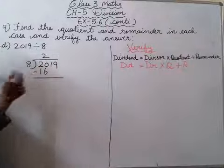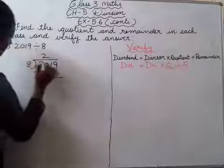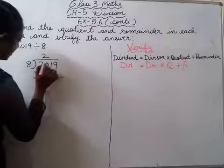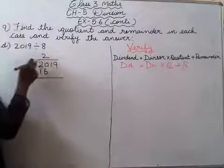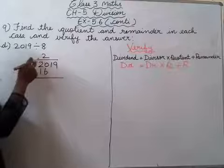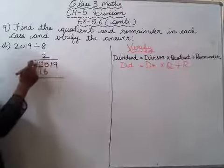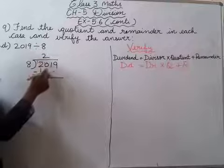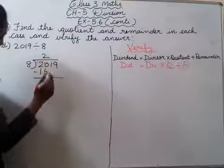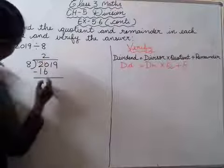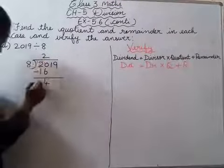0 minus 6 nahi hoga. So you have to borrow. Yeh 10 ho jayega aur yeh jo 2 hai, 1 ho jayega. Kyunki yahaan se borrow karke — matlab yeh dene ke baad hi, yahaan yeh 10 hoga. So 10 minus 6 will be 4. 1 minus 1, 0.